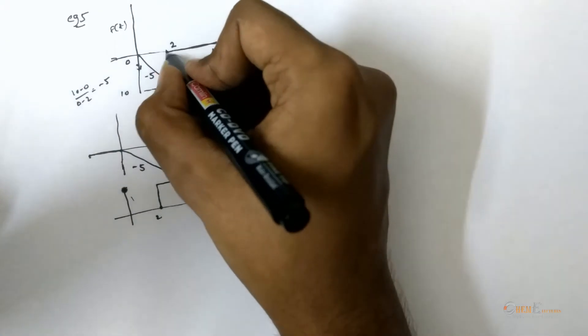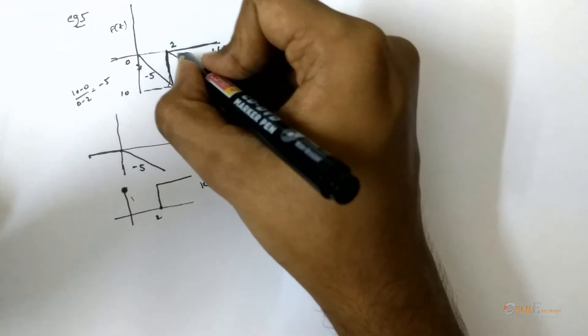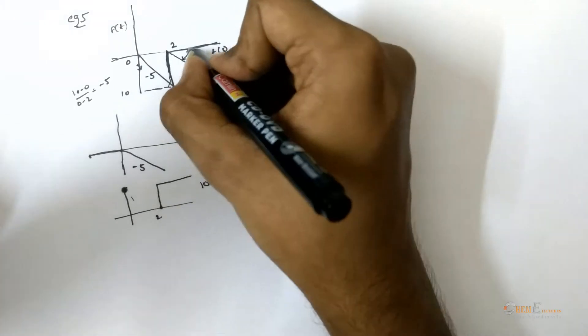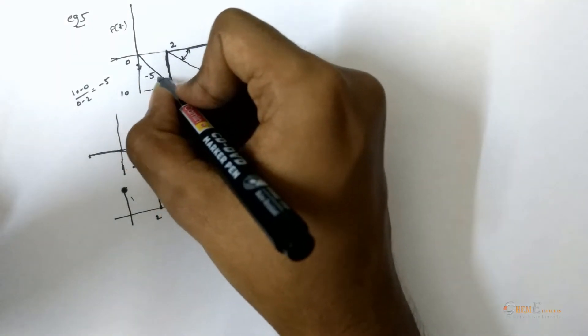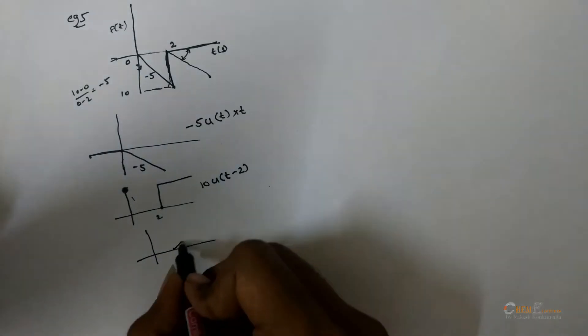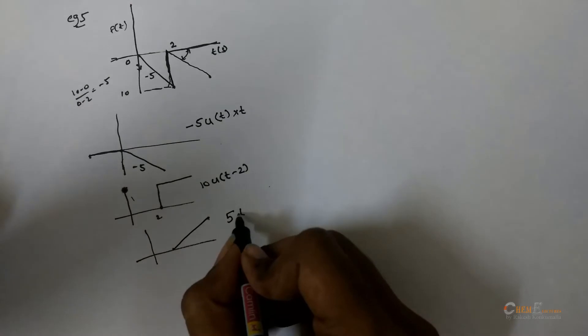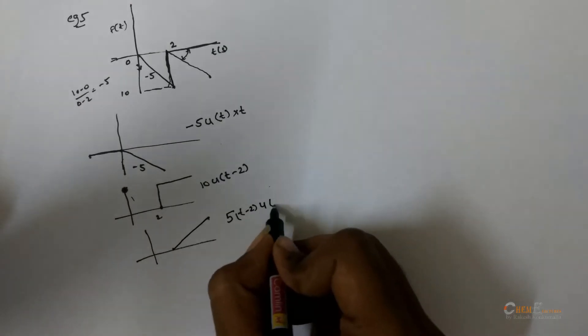After the step, it will be continuing in the similar way. To make it into a straight line at 2, give a slope of 5 increment. Here it will be 5 u.